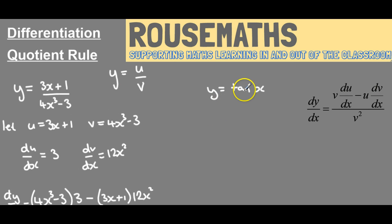Now we're going to have a look at y equals tan x. The reason I've chosen this for a quotient rule question is that tan x can be written as sin x over cos x.